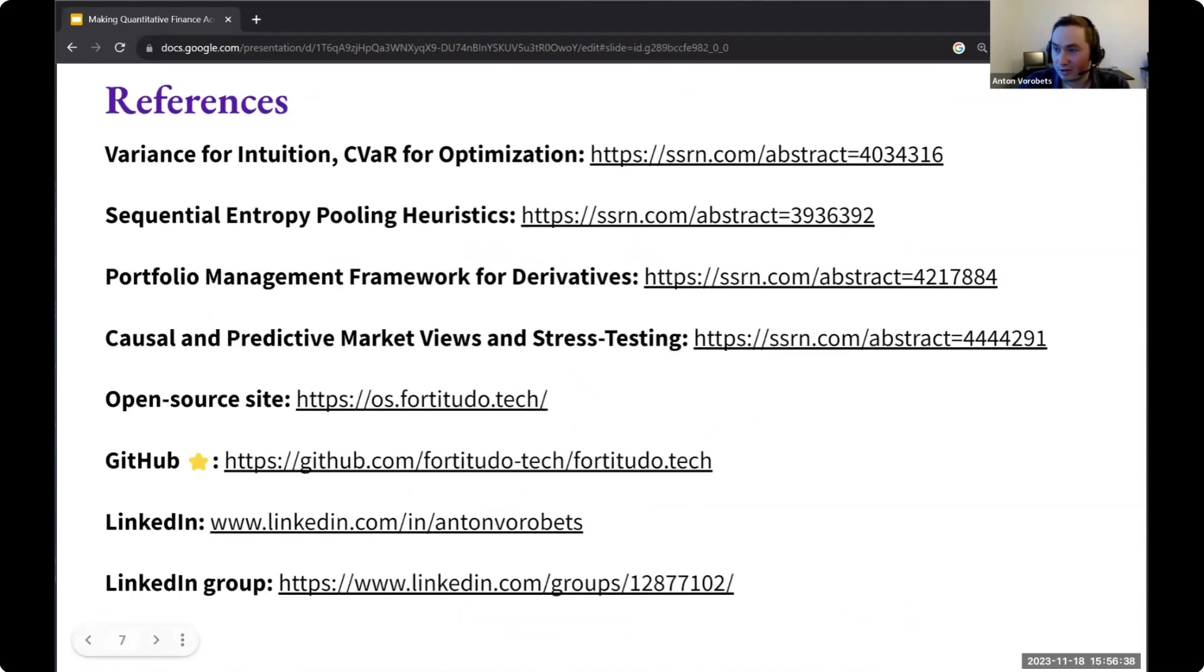All right. So here is the list of references that I was talking about. First of all, there is this article that goes through a comparison between variance and CVaR optimization. It introduces the optimization with the risk budgets. And then you have an article that gives a recap of entropy pooling and introduces the sequential way of using it, as we did in one of the examples. After that, you have this portfolio management framework for derivatives where you learn about this relative market value, why you need to separate into exposures and not just portfolio weights. And finally, you have this causal and predictive framework where you combine Bayesian networks with entropy pooling. For all of these articles, there is accompanied code that we provide you as open source using our open source package. So you can go in, you can see the examples, you can play around with it and test that you understand the theory and maybe explore it even more.